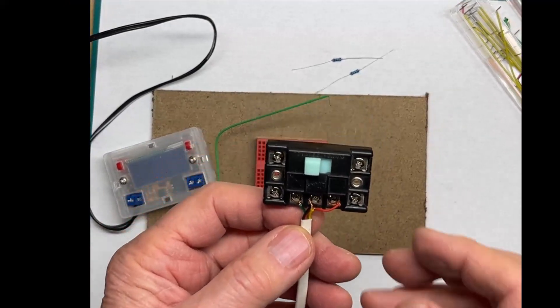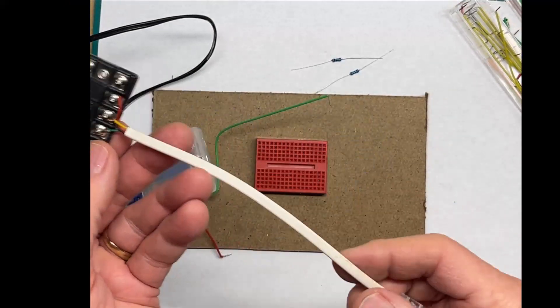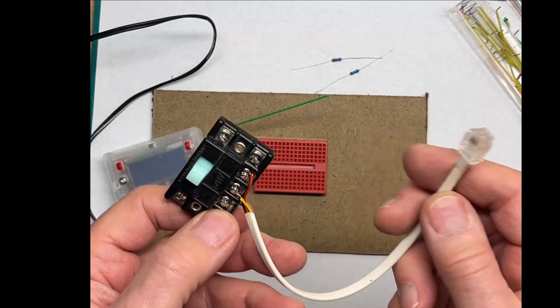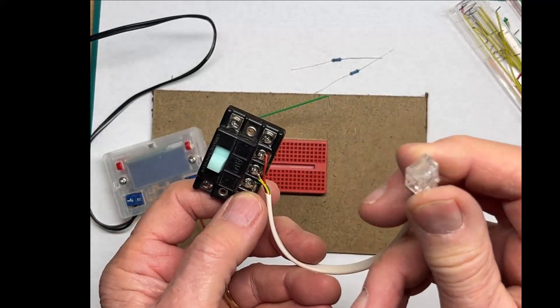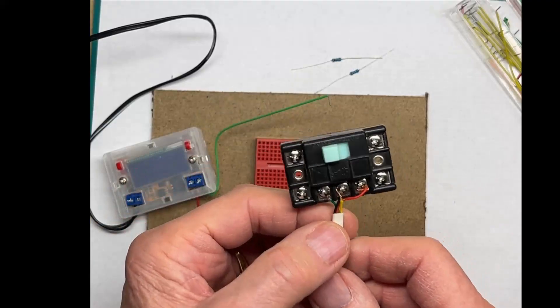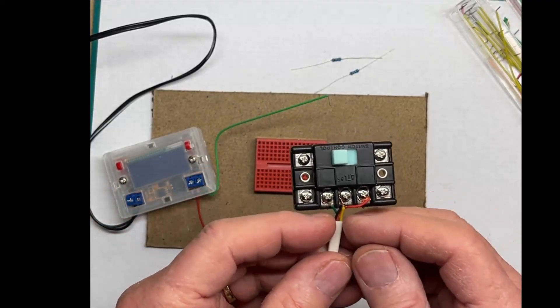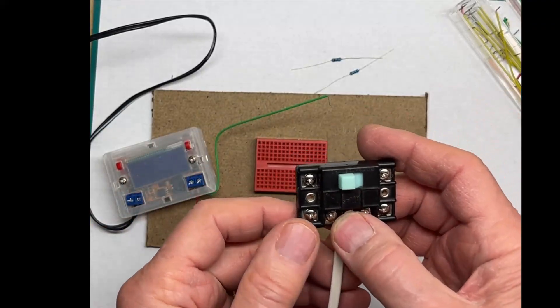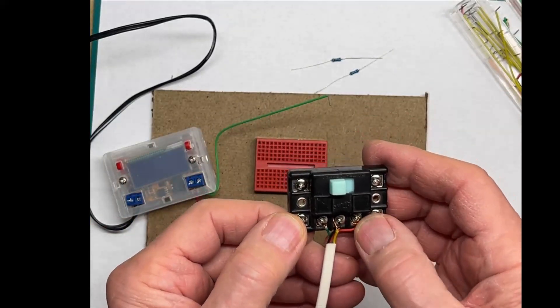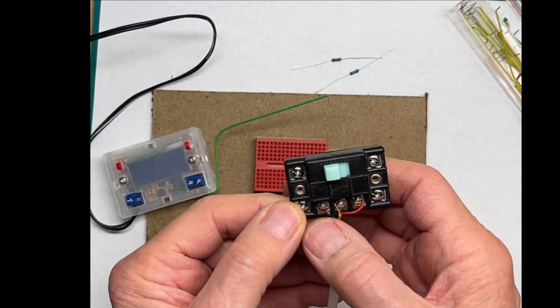And as usual, I'm using these four conductor phone cables with a phone plug on the end. And as I always do, the yellow and the black wires on the outside are the common. The red goes to one of the coils. The green goes to another.